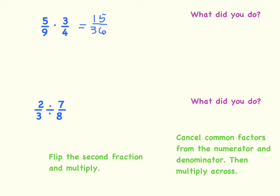Now I have the fraction 15 over 36. This is correct, but it's not fully simplified. So from this point I would have to find a greatest common factor and try to simplify it. My greatest common factor would be 3. I could divide the numerator and the denominator by 3. Remember, if you do something to the numerator, you also have to do it to the denominator. So 15 divided by 3 is 5, and 36 divided by 3 is 12. So this would be my answer.